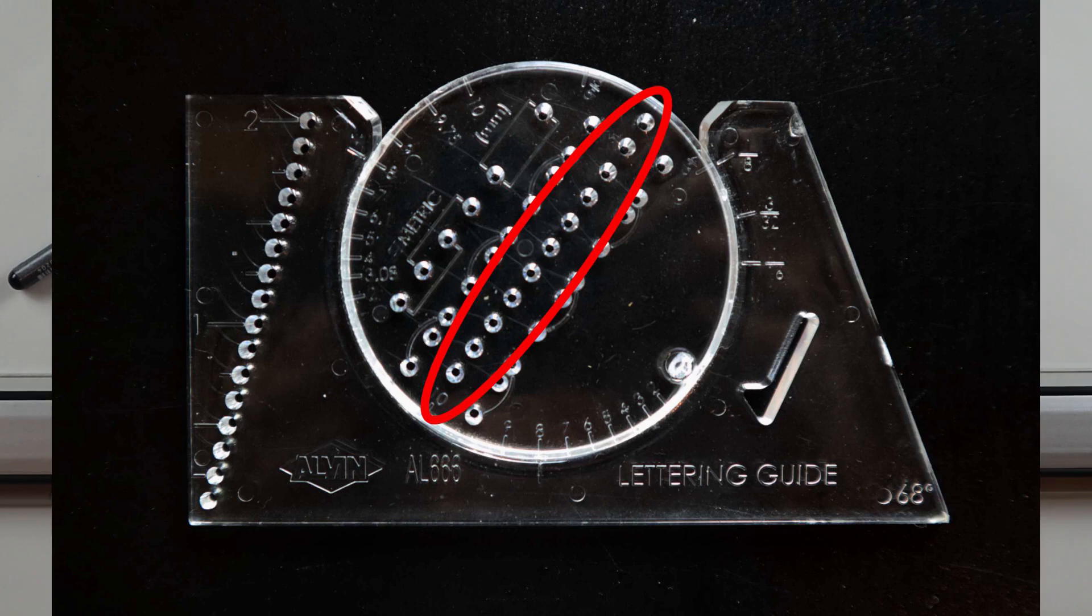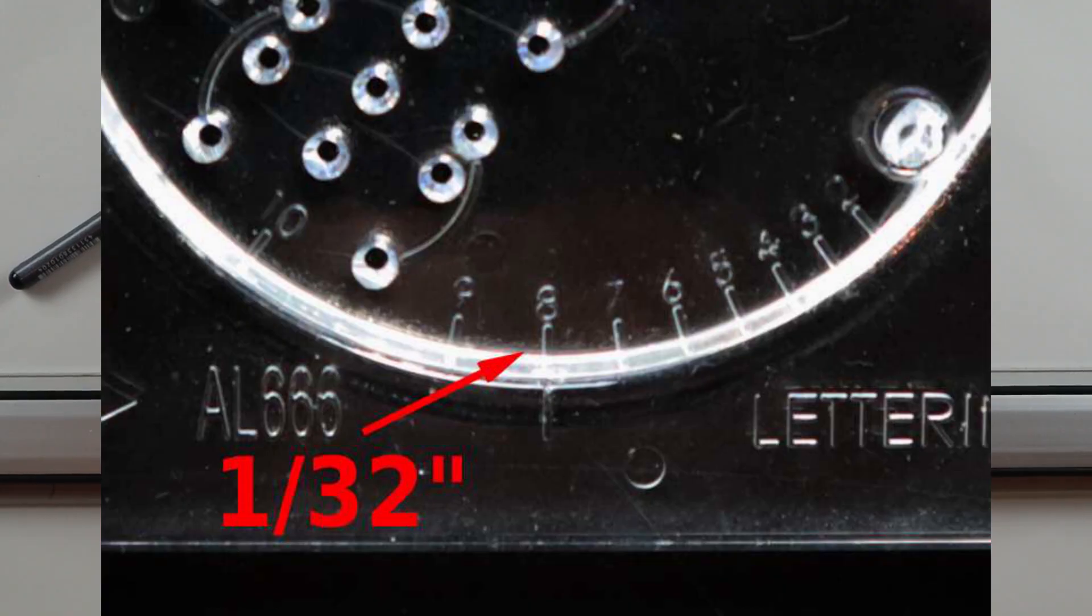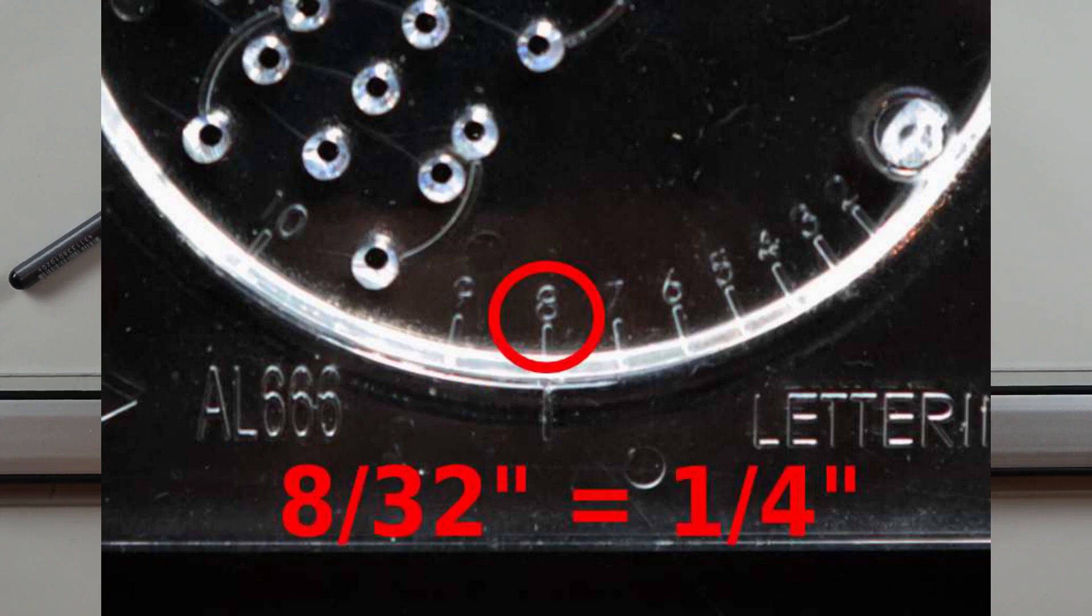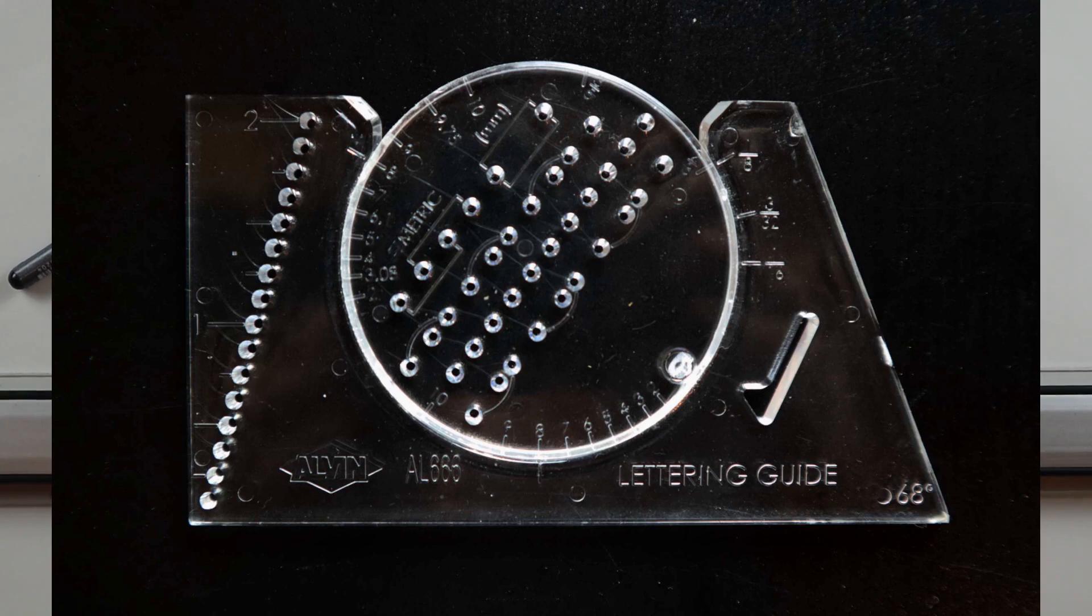The next fairly easy column to understand is the column second from the right. Similar to the previous column, these are evenly spaced holes but can be calibrated along with the numbers on the bottom part of the disk to obtain a desired guide spacing. So for the numbers on the bottom, each number 2 through 10 indicates 1/32nd of an inch. When you line up the number with the tick mark, that indicates the height of the letters you're going to be writing. So if I set the guide to 4, that would indicate 4/32nds of an inch or 1/8 inch in height. If I wanted to write in 1/4 inch height, I would need to have the setting of 8, because 8/32nds of an inch equals 1/4 of an inch. It doesn't really take long to get the hang of the fractions, but if it confuses you, just make a cheat sheet and keep it handy.